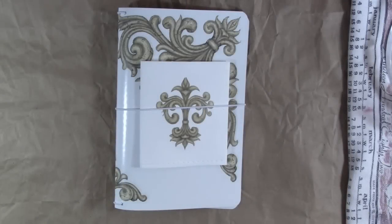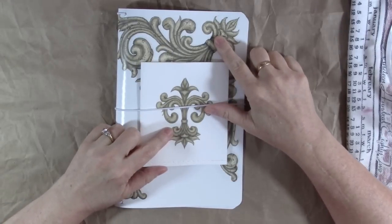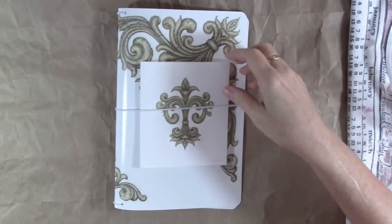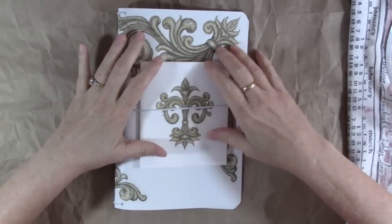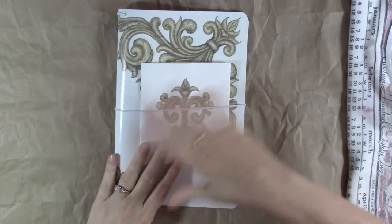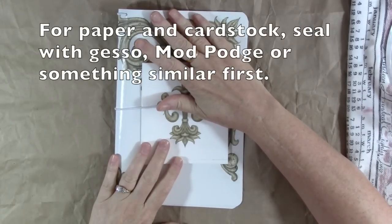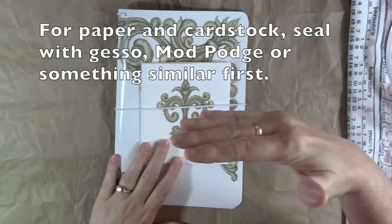I have something new to show you. I've got some water slide decals available in my Etsy shop that you can use to decorate not only your custom keeper and inserts, but pretty much any smooth surface. You can put them on paper, cardstock, vinyl, plastic.